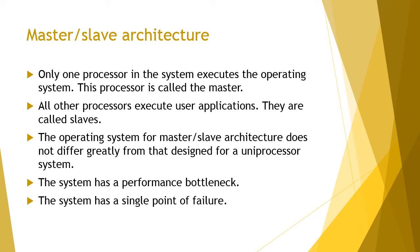If the master is slow, the system cannot be fast. The system also has a single point of failure — the part whose failure brings the whole system down, which is the master. The beauty of master-slave architecture is you can run it with a uniprocessor OS. The problems are that the system is slow and unreliable — if the master fails, the system fails. This makes master-slave architecture a concept we do not implement anymore.